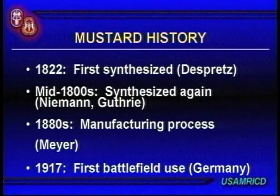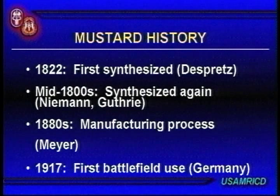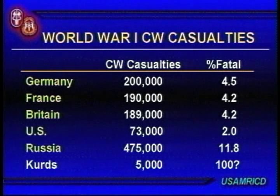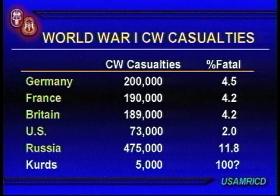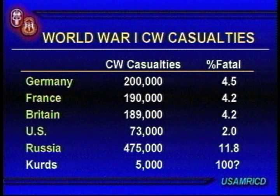Sulfur mustard was first synthesized back in 1822, then rediscovered in the mid-1800s. Its first battlefield use was near Belgium in July 1917, right in the last year of the war. This is a breakdown of the casualties of World War I. There were roughly a million chemical casualties — about 30% of all casualties in WWI were chemical casualties. Less than five percent of those casualties were fatal.